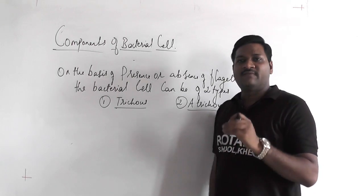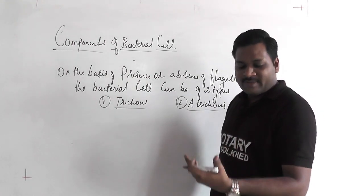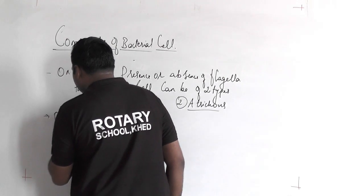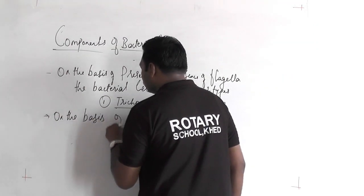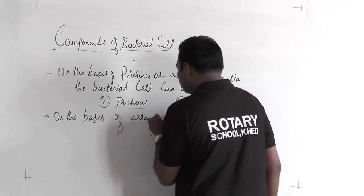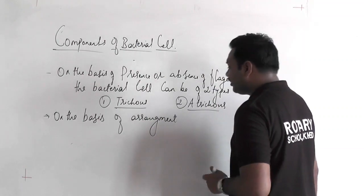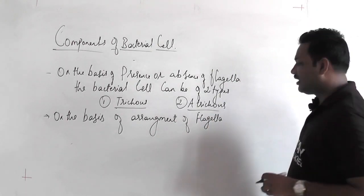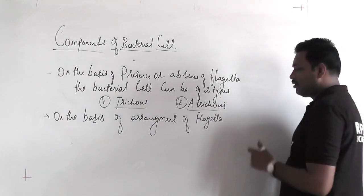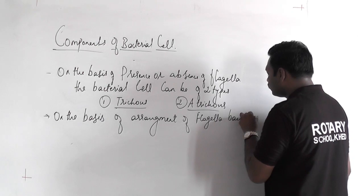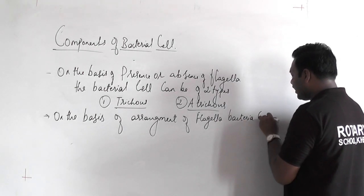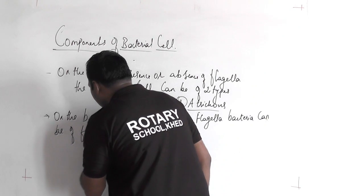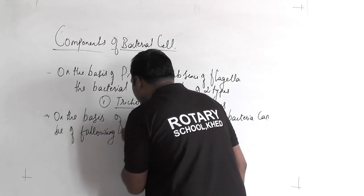If there is a presence of flagella within the bacteria, they can be further classified on the basis of arrangement of flagella. Depending on how the flagella are arranged, bacteria can be of the following types.